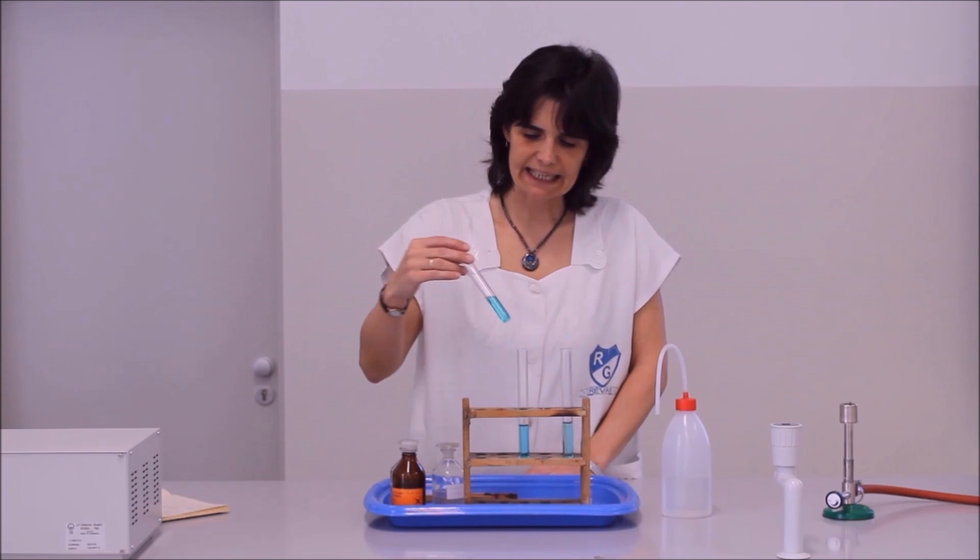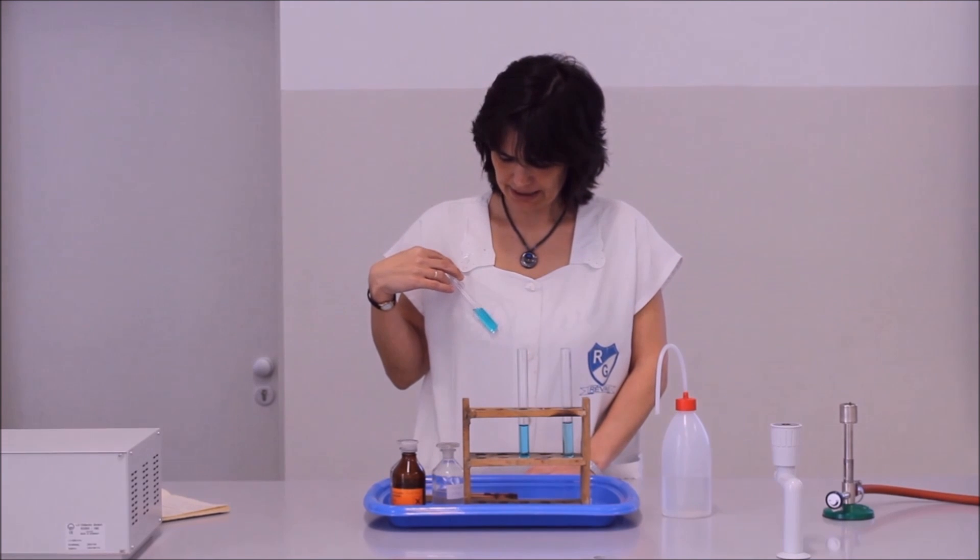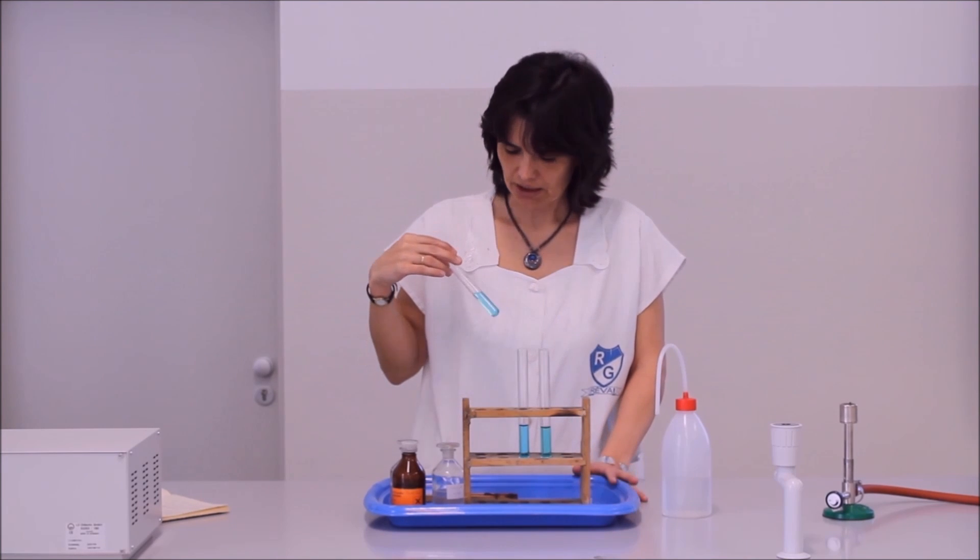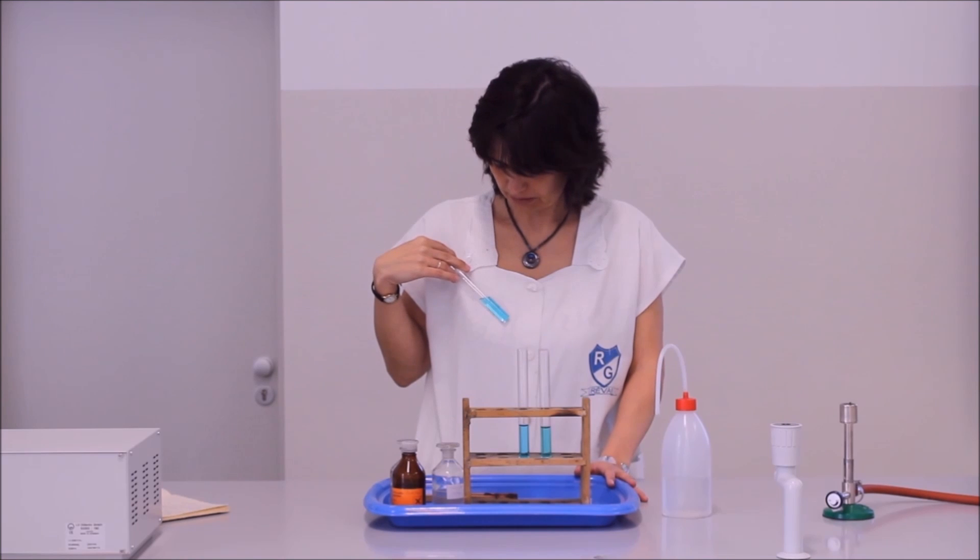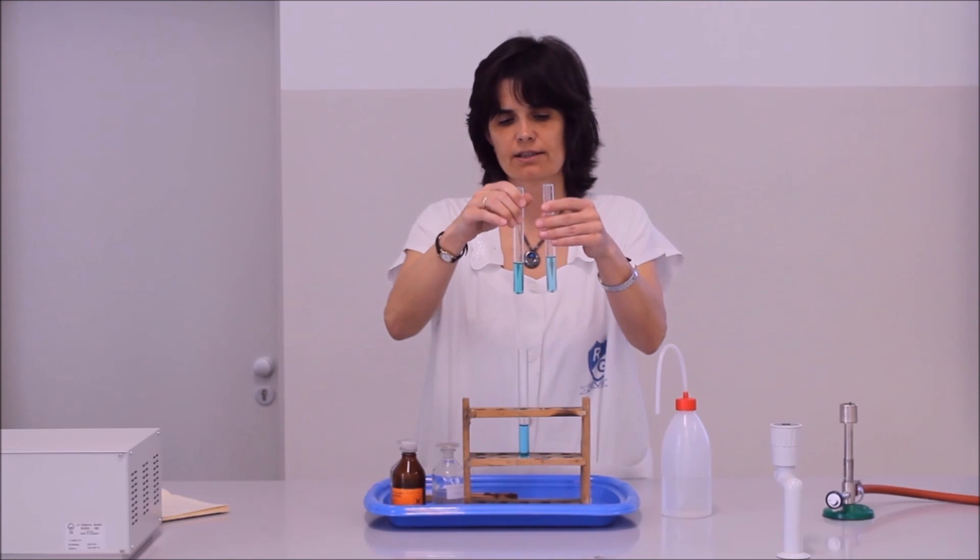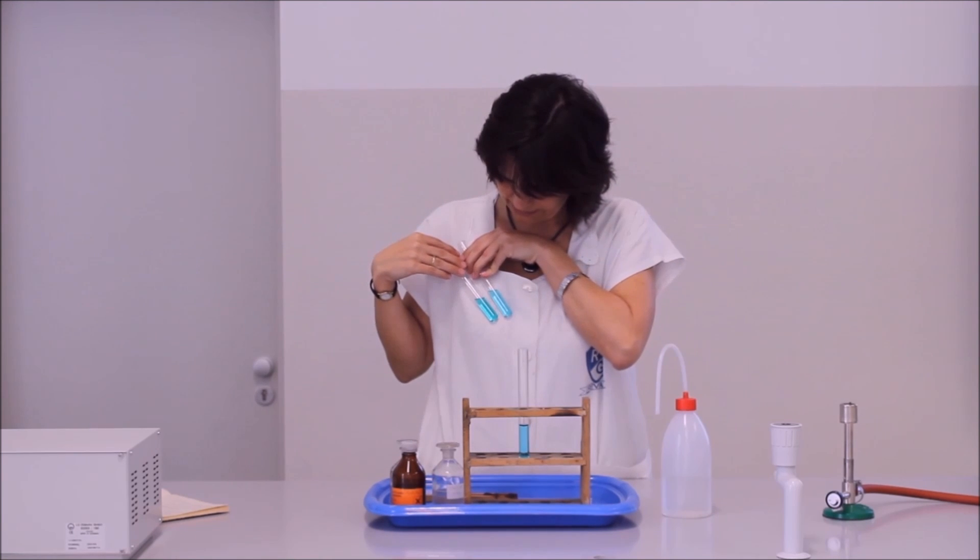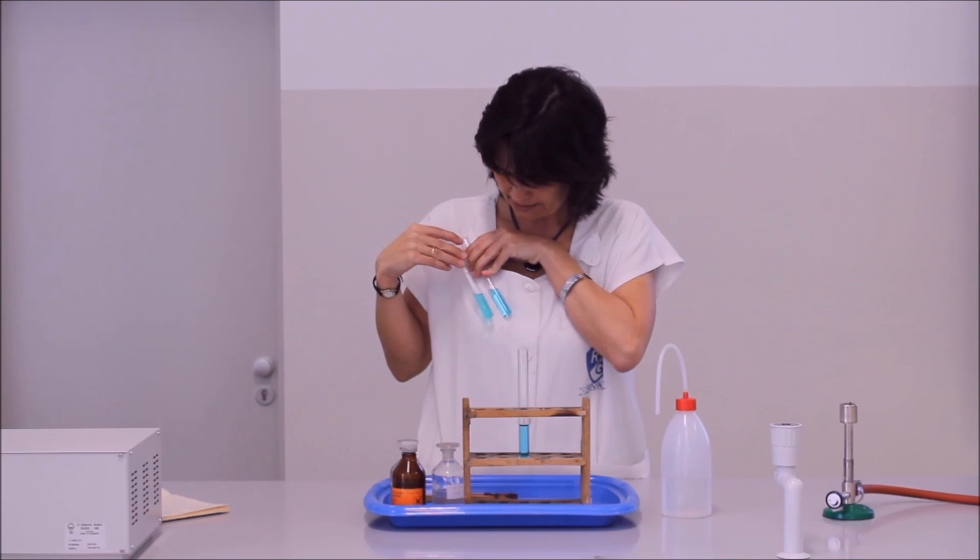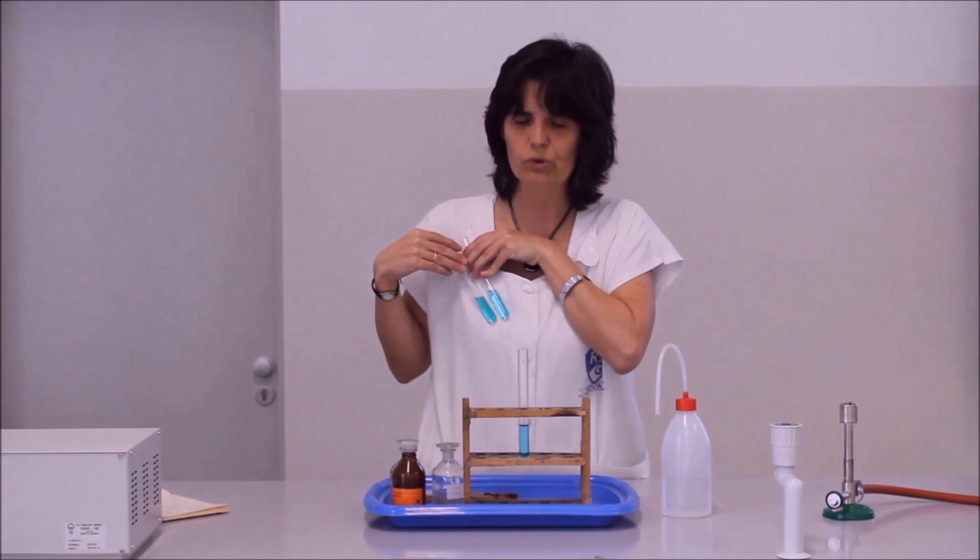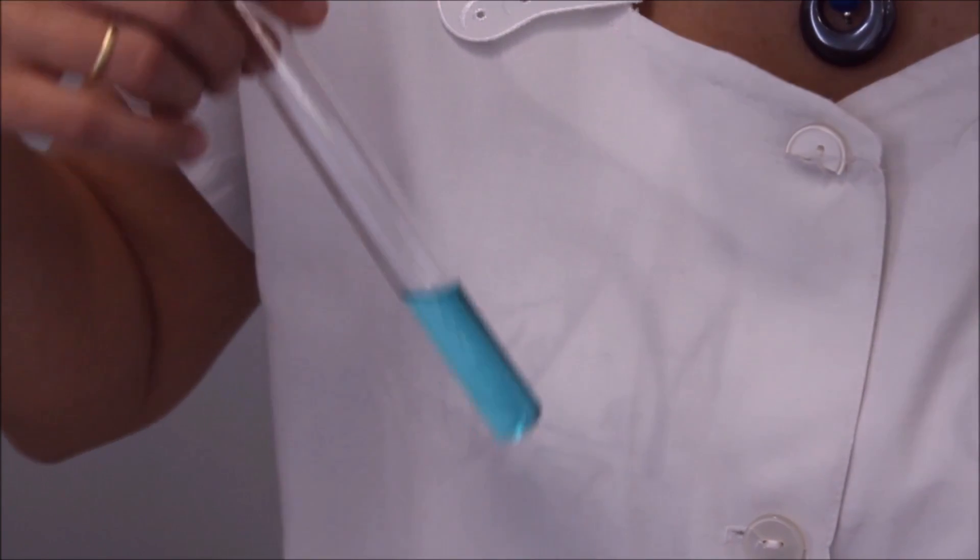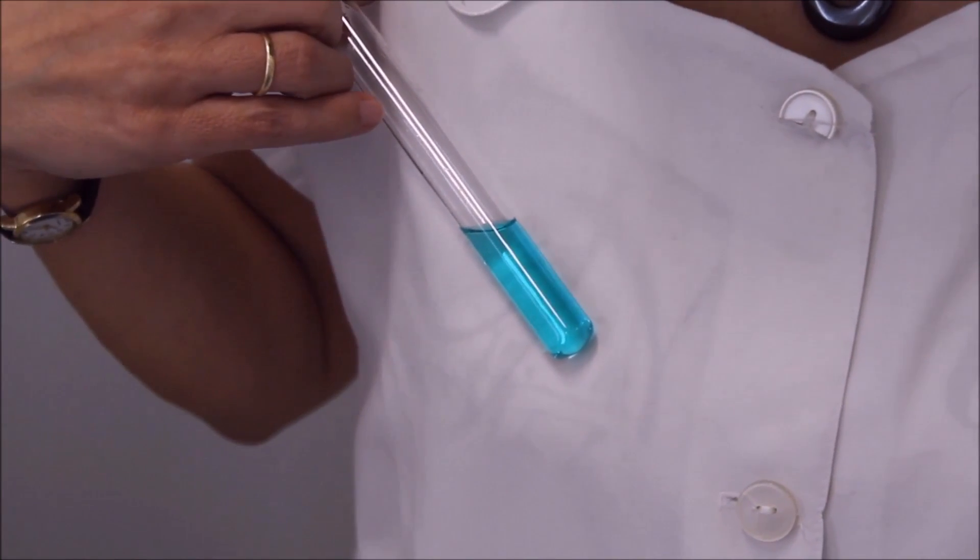Ez a desztillált vízzel hígított egyensúlyrendszer kékeszöld színű, ez pedig a telített káliumszulfáttal hígított egyensúlyrendszer. Számra annyira nem lehet különbséget tenni a két oldat színe között, viszont így jól látható, hogy az eredeti vízzel hígított zöldesebb, a káliumszulfáttal hígított pedig kékesebb színű.